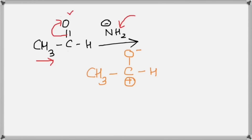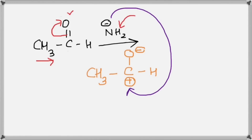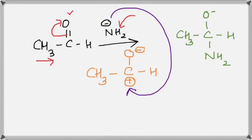The carbon that lost electrons gets a positive charge, and the oxygen that gained electrons gets a negative charge. NH₂⁻ is a negatively charged species, so the electrons on the nitrogen atom will go to the positive carbon. We end up with CH₃-C bearing an O⁻ and an NH₂ group, along with an H atom — that is how the reaction takes place.